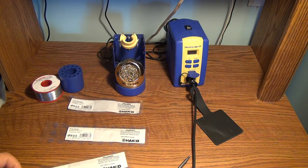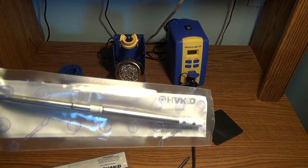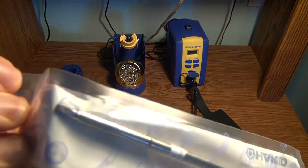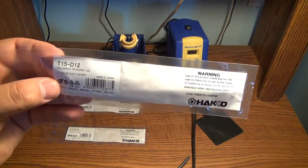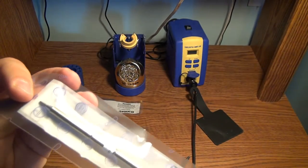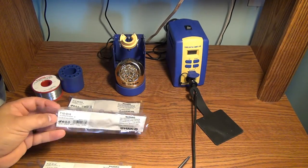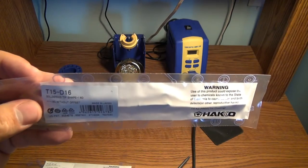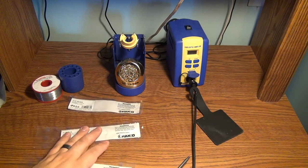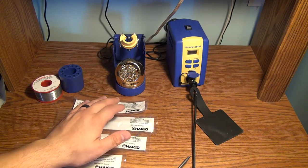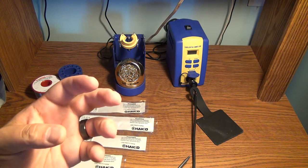The tips I have here are the T15-DL32, this is a big wedge tip or a chisel tip some people call it. Then we have the T15-D12, this is a really tiny chisel tip. And then this is the T15-D16, and this is a medium size chisel tip. Conical tips are terrible—don't buy conical tips. The heat transfer on them is terrible. You always have to have a big old glob of solder on them.